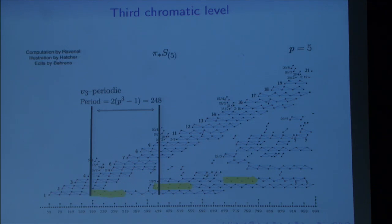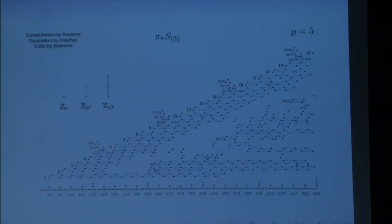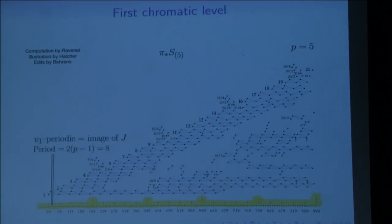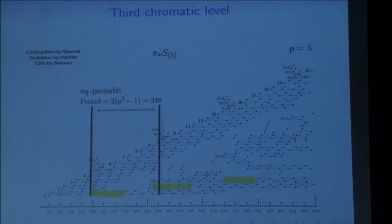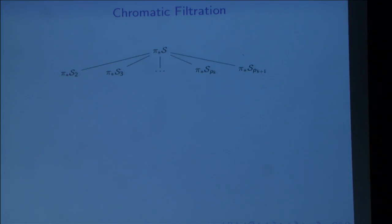Inside very messy computational data, there are periodic regular patterns. We call them chromatic levels. This represents the first chromatic level, this represents the second chromatic level, and then this is the third one. They give a chromatic filtration on the homotopy groups of spheres. We take π* of S and choose one p-torsion at a time, but then each of these—this is the 2-torsion part—splits further into chromatic building blocks.